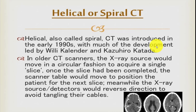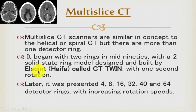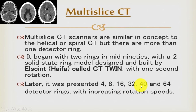Helical or spiral CT was introduced in the early 1990s with the work of Kalender and Kajuhiri. In older CT scanners, the x-ray source moved in a circular fashion to acquire a single slice. Multi-slice CT scanners are similar in concept to helical CT but use multiple detectors. They gained traction in the mid-1990s, and now systems with 4, 8, 16, 32, 40, 64, and up to 128 detector rings are used.